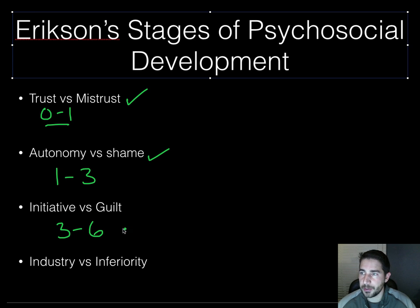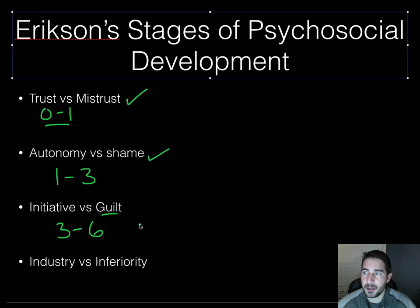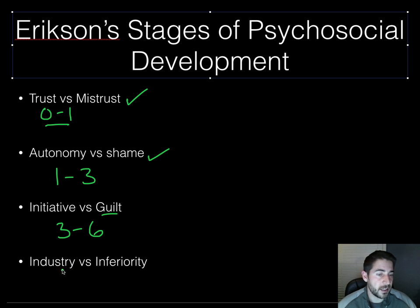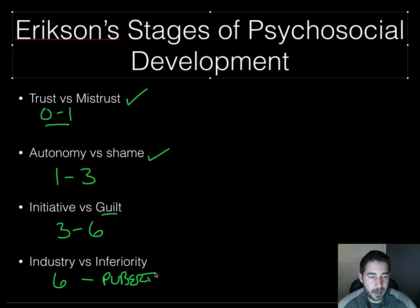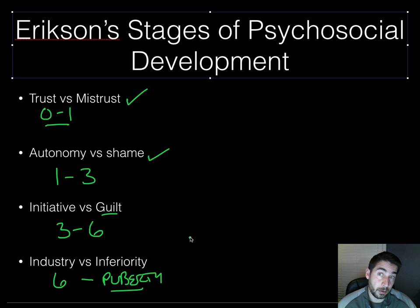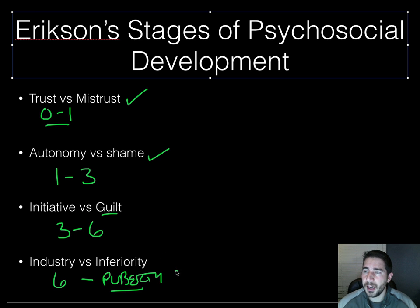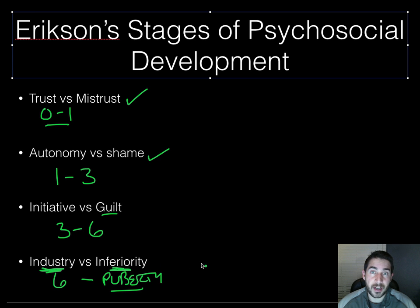You move on to initiative versus guilt, which is about three to six — your preschool years. They carry out plans but often feel guilty about being independent from their caretakers. Stage four is industry versus inferiority, from about six to puberty, which can happen anywhere from age 11 to 14. This is where children learn the pleasure of applying themselves to tasks — they're industrious — or they feel inferior if they're not able to do that.